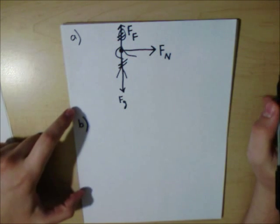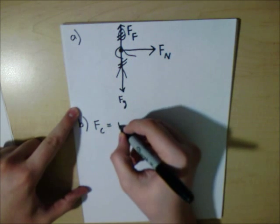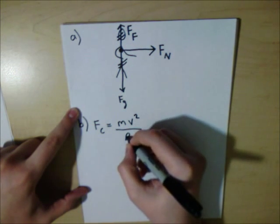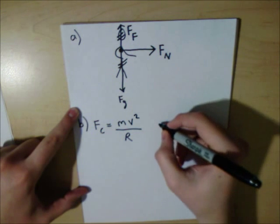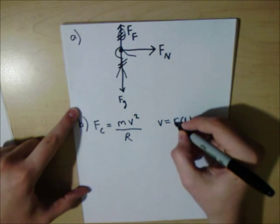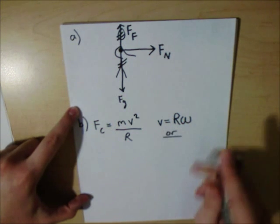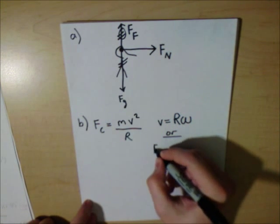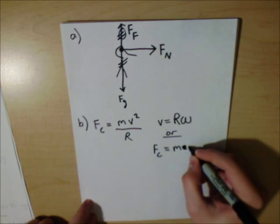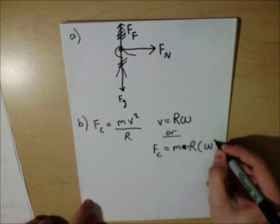So we will use the centripetal force, where it is equal to the mass times velocity squared over our radius, where the velocity is equal to the radius times omega. Or we can do the centripetal force is equal to the mass times the radius times omega squared, and we will use this method.